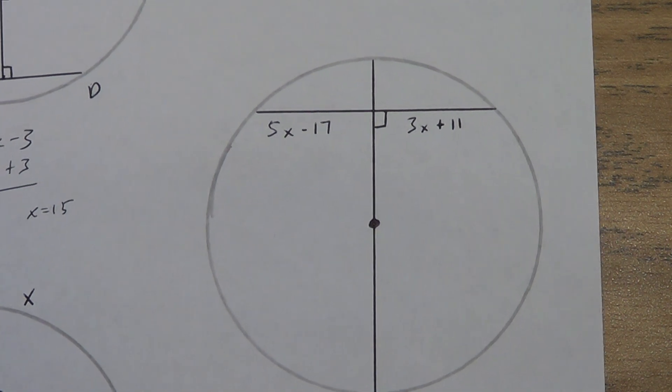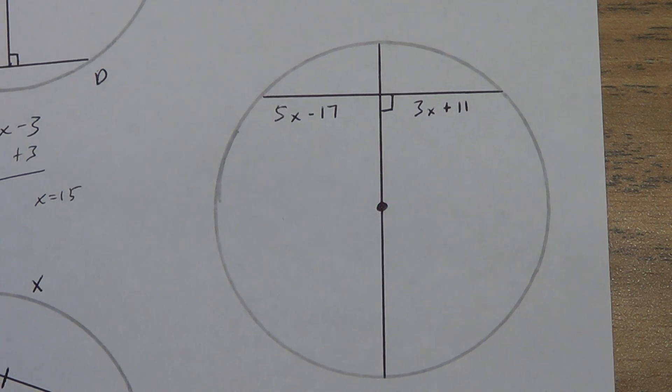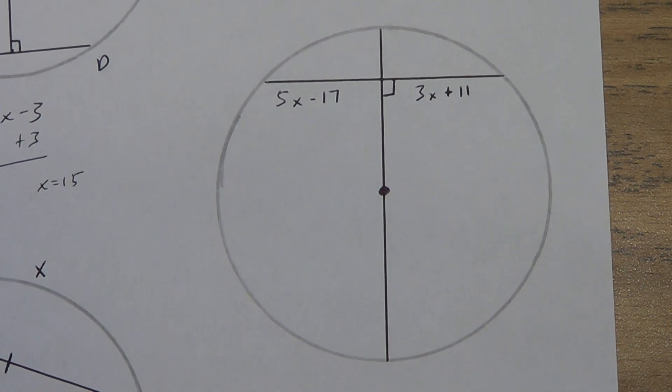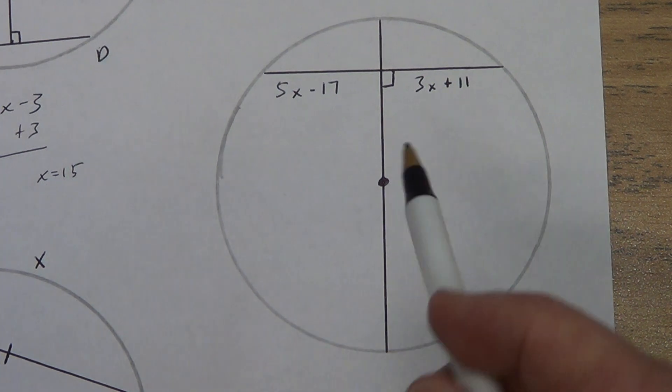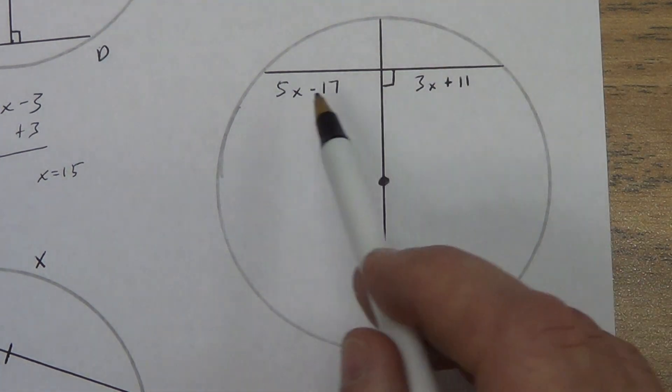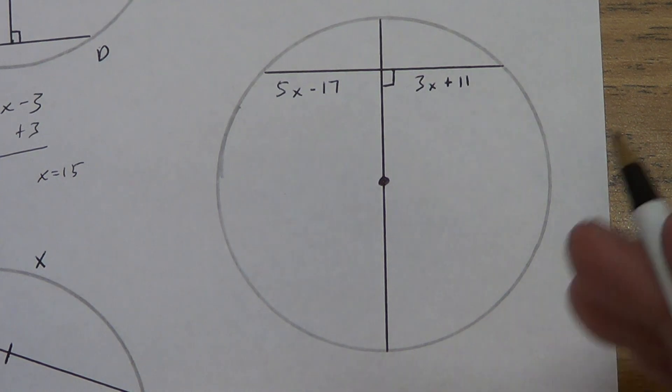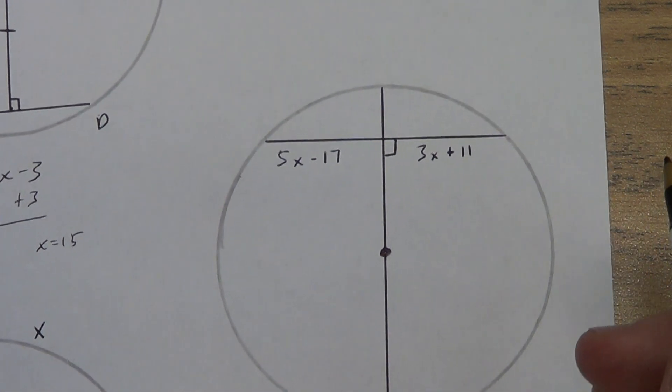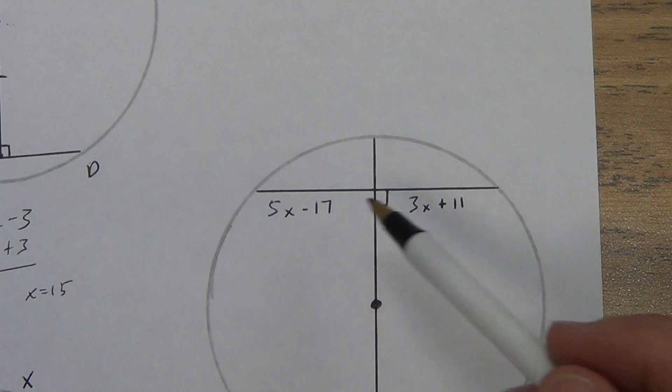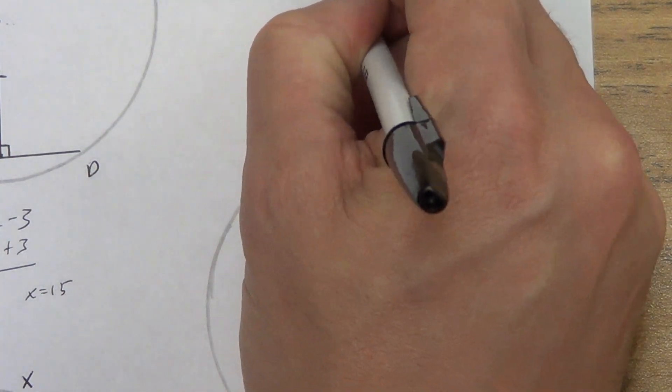Alright, so hopefully you already solved this one. If you weren't sure what to do, pay attention because I'm going to expect you to be able to do this on your quiz and on your test. So we know that if a diameter is perpendicular to a chord, then what does it do to that chord? Hopefully you're thinking it bisects that chord. And bisect, we know, means that this side is equal to that side. So once again, we have a pretty simple algebra problem. 5x minus 17 equals 3x plus 11.